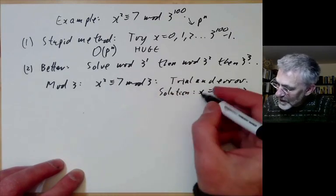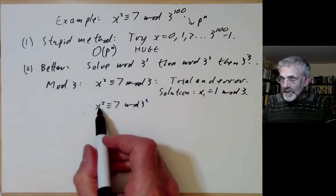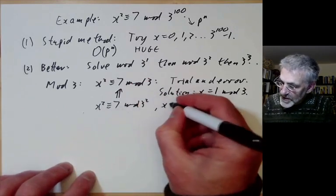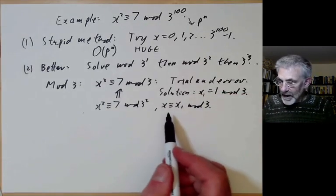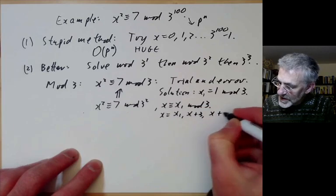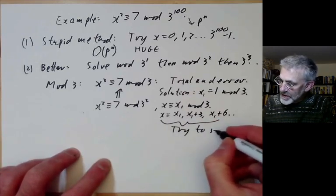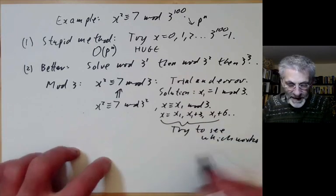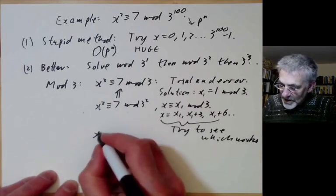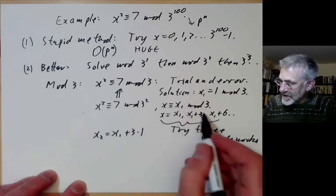Next, we want to solve x² ≡ 7 mod 3². This implies x ≡ x₁ mod 3, so x must be x₁, x₁ + 3, or x₁ + 6. We try these and find that x₂ = x₁ + 3·1 is a solution.